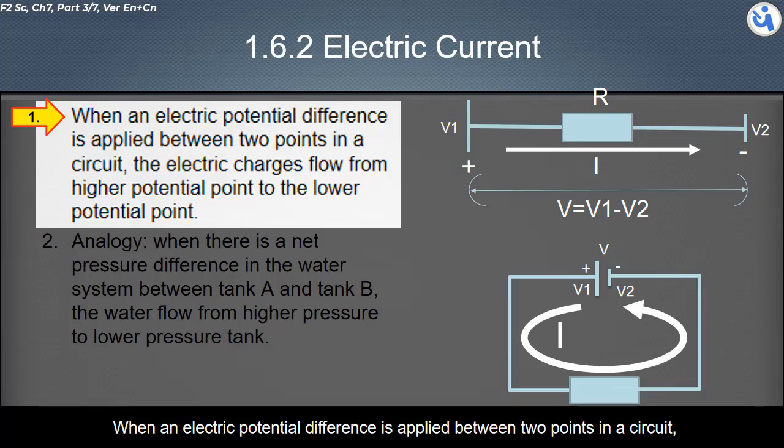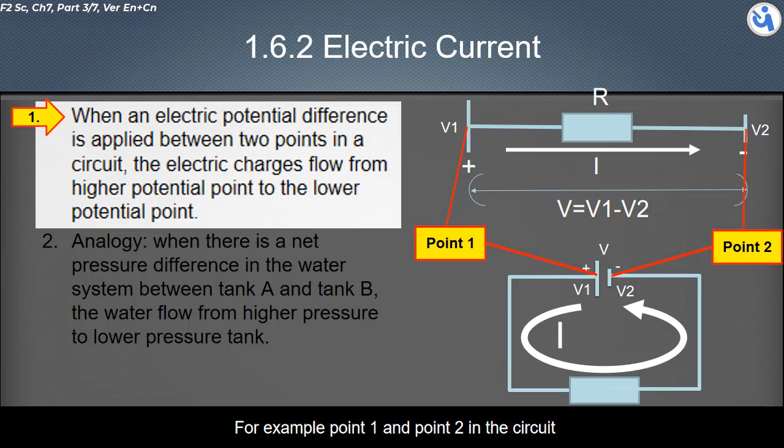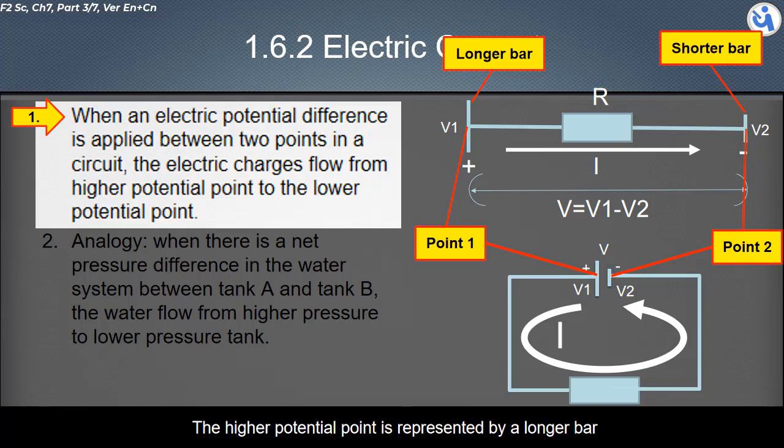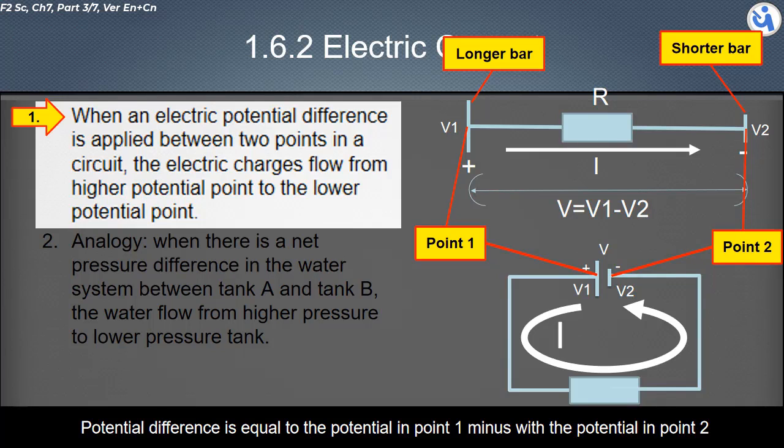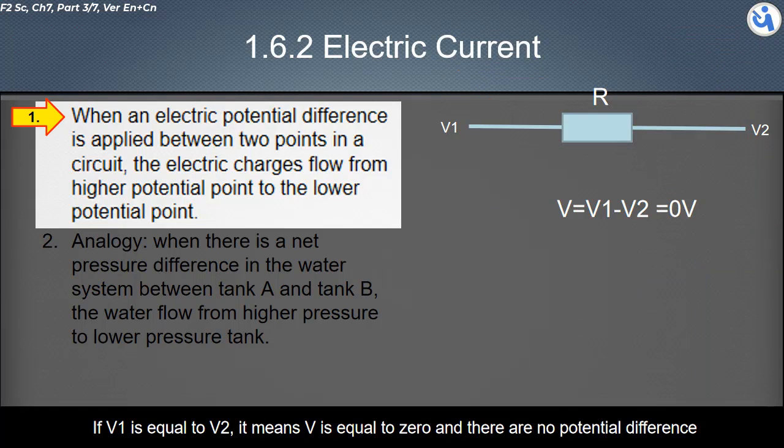When an electric potential difference is applied between two points in a circuit, electric charges flow from higher potential point to the lower potential point. Point 1 has higher potential and point 2 has lower potential. Potential difference equals the potential in point 1 minus the potential in point 2. If V1 equals V2, it means V equals zero, there is no potential difference, and no electric current occurs.